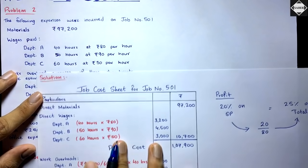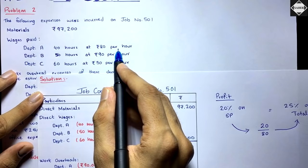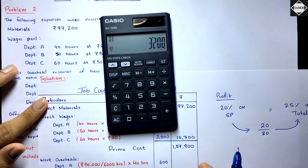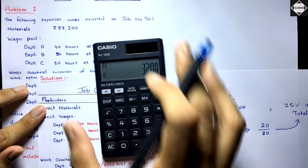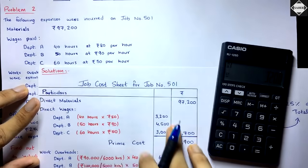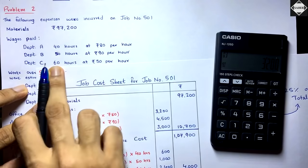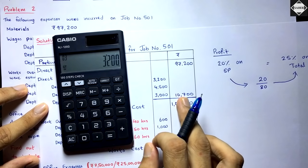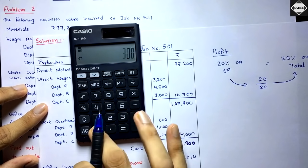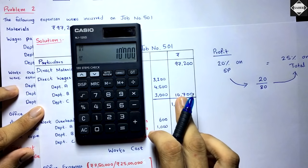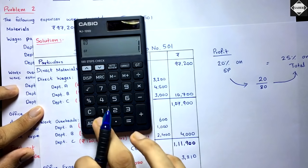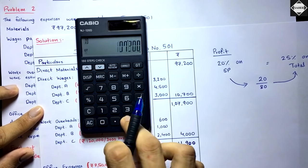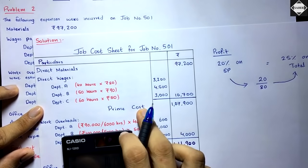Next we take direct wages. Department A: 40 hours × ₹80 = ₹3,200. Department B: 50 hours × ₹90 = ₹4,500. Department C gives ₹3,000. We take these in a column and sum them: ₹3,200 + ₹4,500 + ₹3,000 = ₹10,700 total direct wages for this job. Adding direct materials ₹97,200 we get the prime cost of ₹1,07,900.